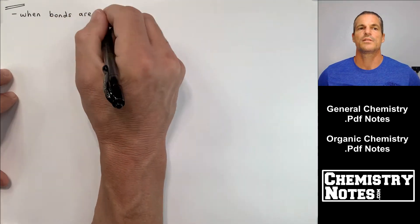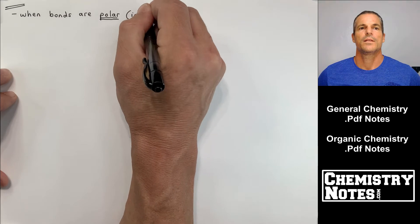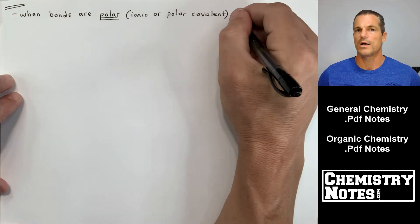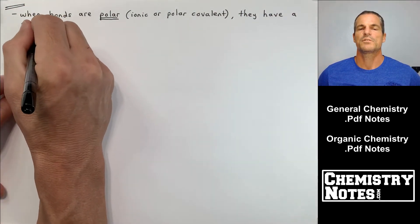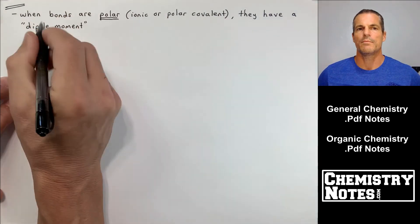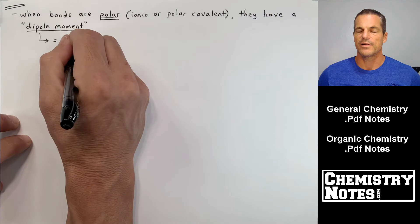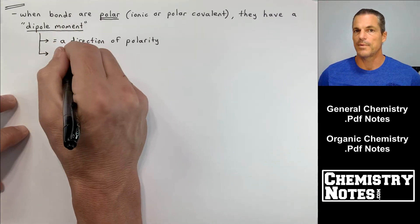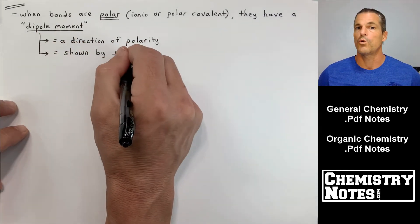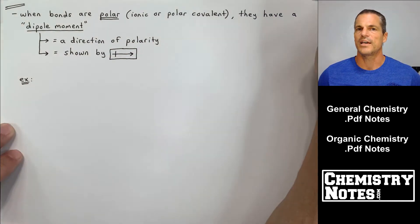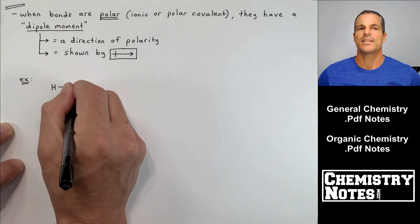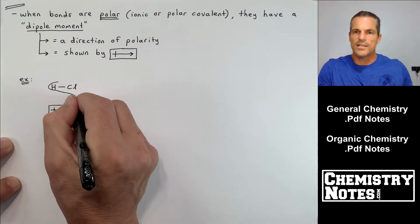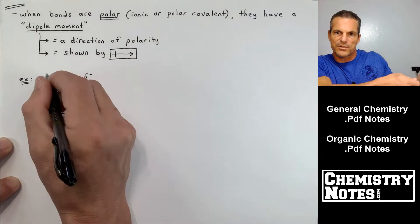Top of page 3 of our notes. It says when bonds are polar, in other words, when bonds are ionic or polar covalent, those are the two types of polar bonds, with the ionic being the most polar, they have what's known as a dipole moment. A dipole moment means I can draw a direction of polarity across a bond. This is shown by an arrow with a little plus sign towards the tail. So as an example, HCl.